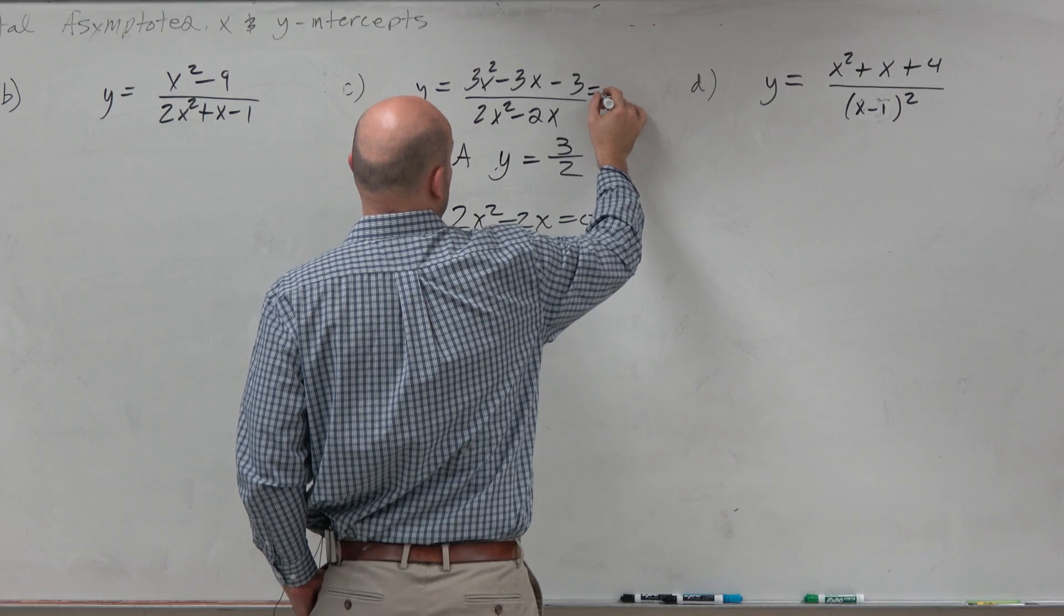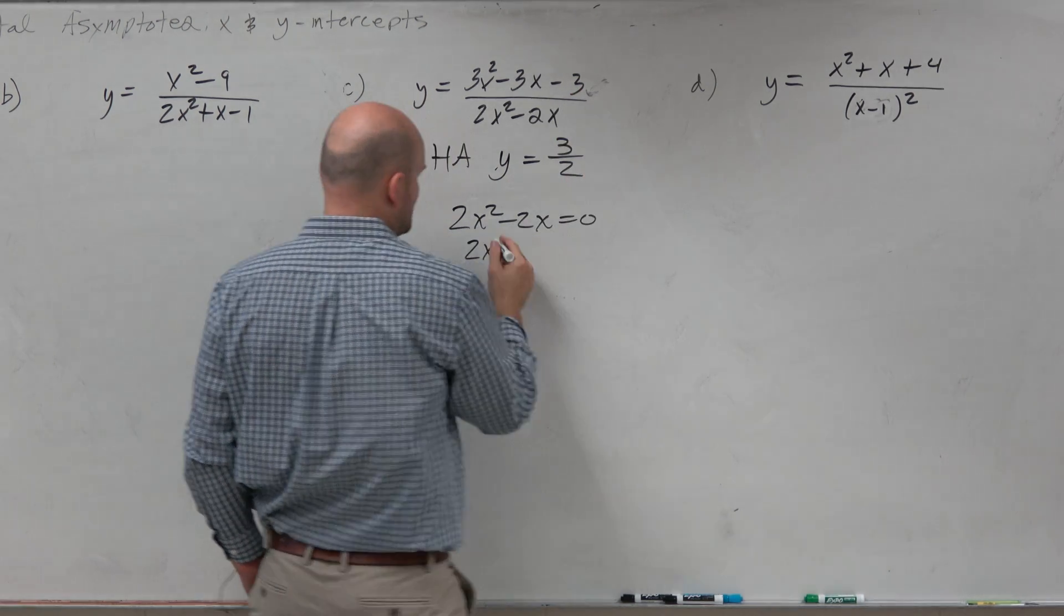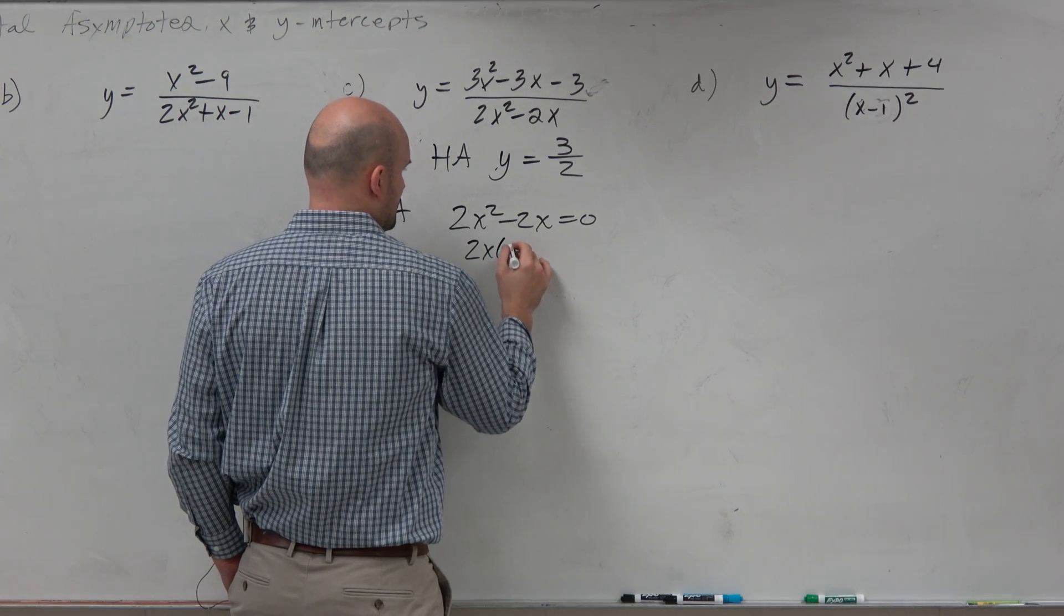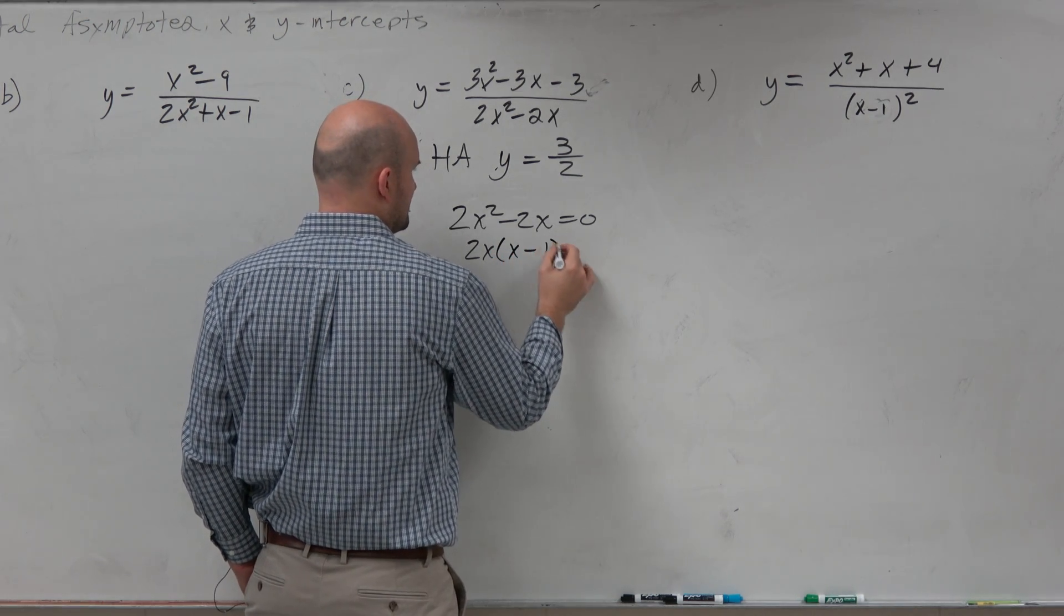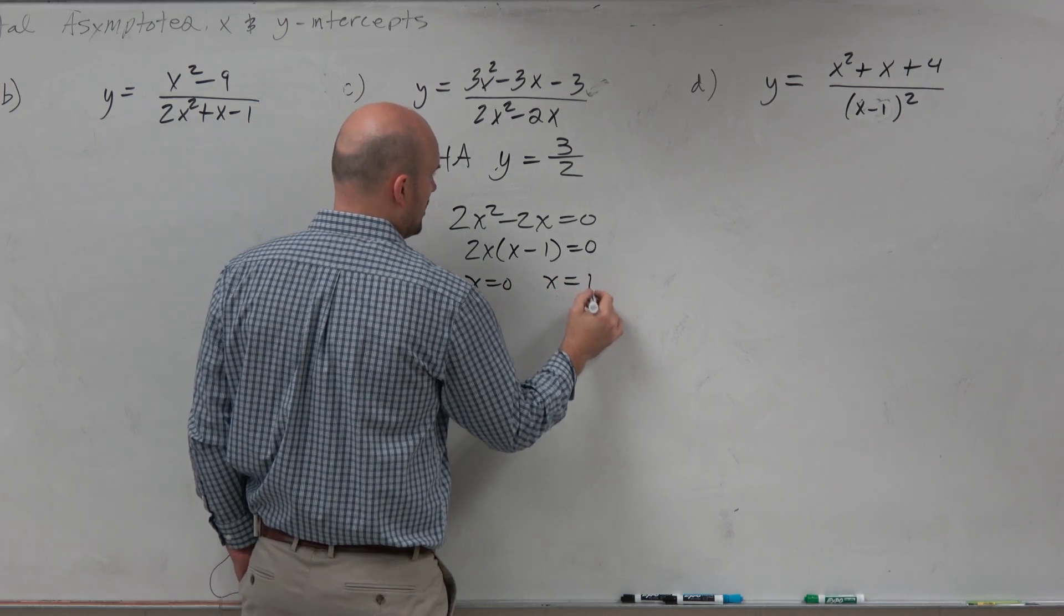So if I factor out a, actually, you know what? I'm going to come, I'll come back to this. Let's solve this first because that's a little bit easier, a little bit more difficult to factor. So now I can say x is equal to 0 and x is equal to 1.